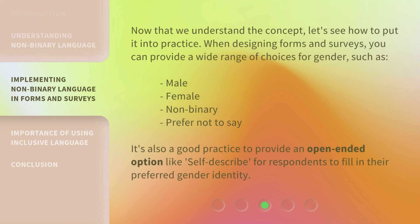Now that we understand the concept, let's see how to put it into practice. When designing forms and surveys, you can provide a wide range of choices for gender, such as male, female, non-binary, and prefer not to say. It's also a good practice to provide an open-ended option like self-describe, for respondents to fill in their preferred gender identity.